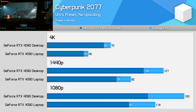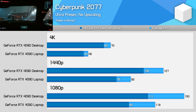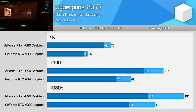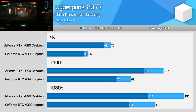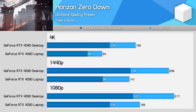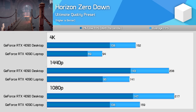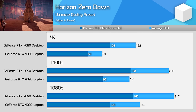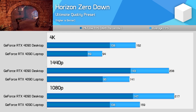Cyberpunk 2077, using the Ultra preset without ray tracing or upscaling, is quite favourable to the desktop RTX 4090. At 1080p, it was 27% faster than the laptop GPU, which then grew to 39% at 1440p and 55% at 4K. With the frame rates seen here, this is quite significant as it's the difference between 45fps at 4K on the laptop and 70fps on the desktop, with the desktop being much more playable. Next up is Horizon Zero Dawn, which showed a 37% margin between the two models at 1080p, a 48% margin at 1440p, and a 61% margin at 4K. So at all three resolutions, there is a strong performance lead for the desktop card in this game.